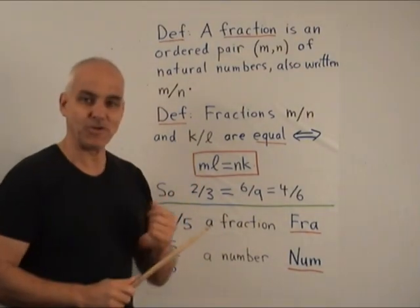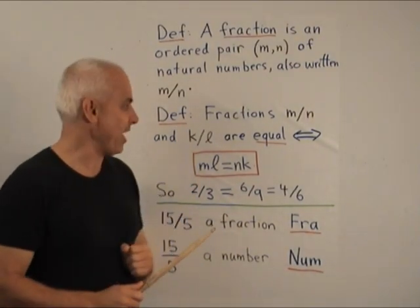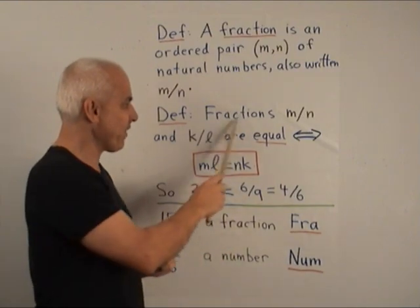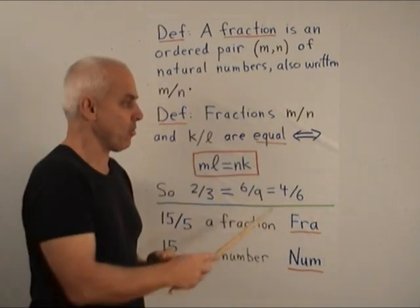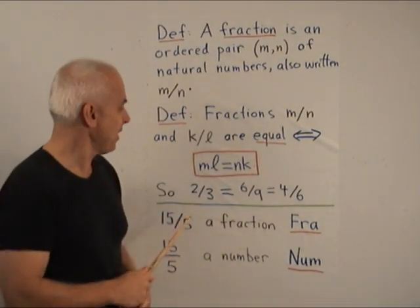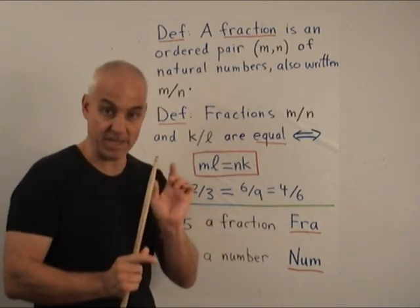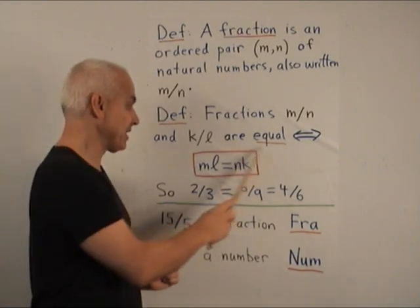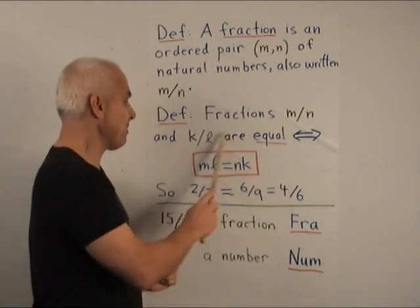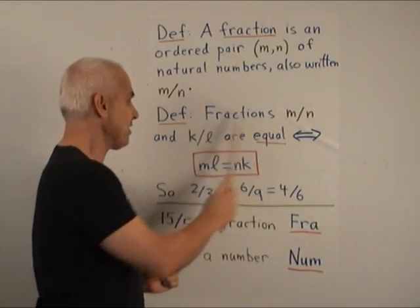And there's an important notion of equality that occurs with fractions. If we have two fractions, m slash n, or we say m over n, and k over l, then these two fractions are declared to be equal precisely when m times l equals n times k.